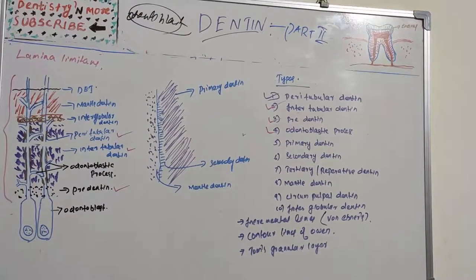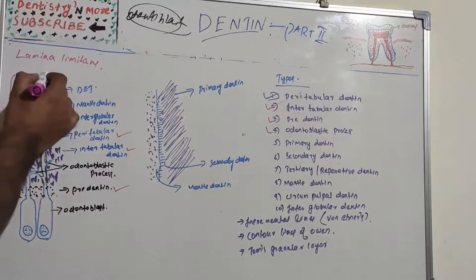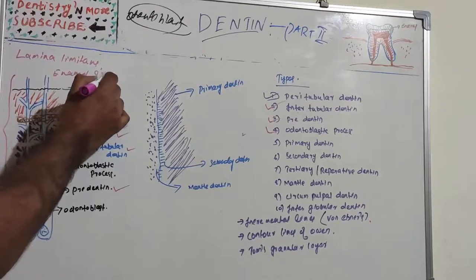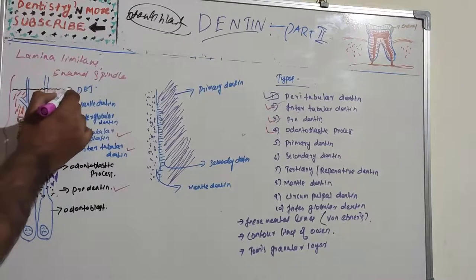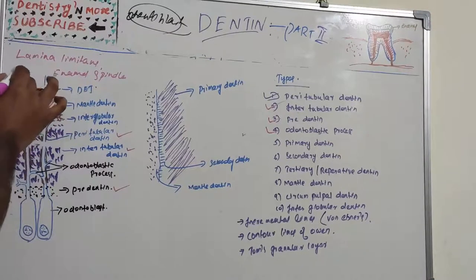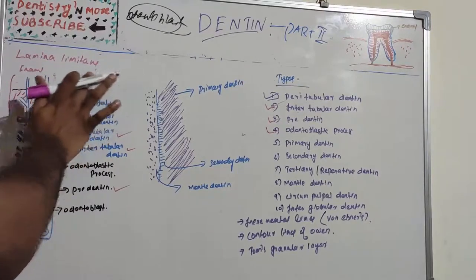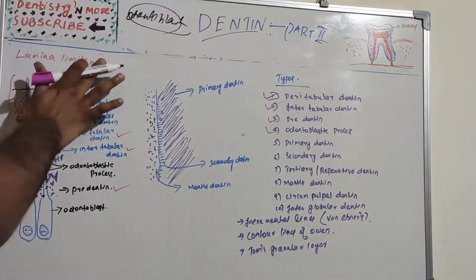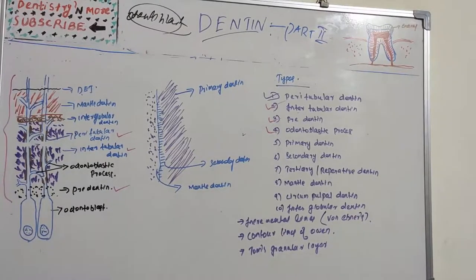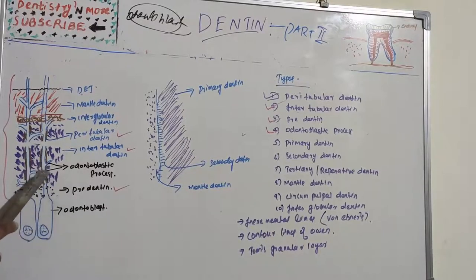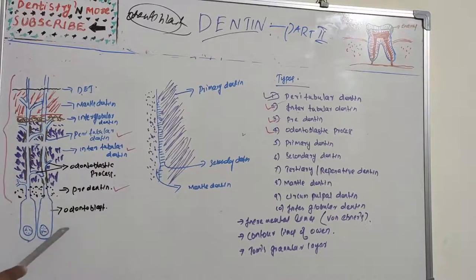The odontoblastic process is the cytoplasmic extension of odontoblasts. The enamel spindle is the odontoblastic process which crosses the DEJ and ends in enamel. The odontoblast resides in the peripheral pulp at the pulp-predentine border, and its process extends into the dentinal tubule. The process is largest in diameter near the pulp and becomes thinner as it moves towards dentine.